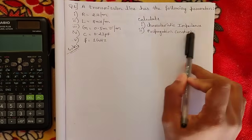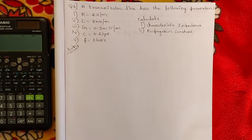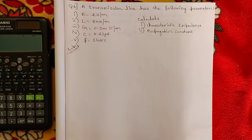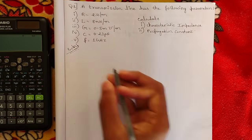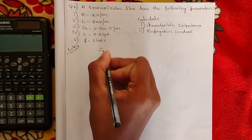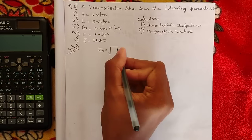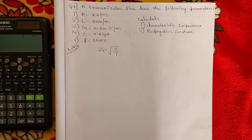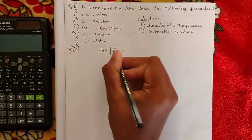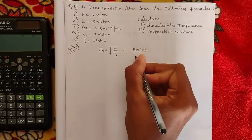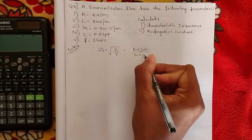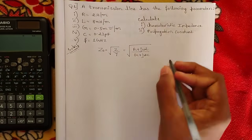Based on these parameters we need to calculate the characteristic impedance and the propagation constant. We have already derived the expression for these. The characteristic impedance Z0 equals the square root of Z divided by Y, where Z = R + jωL and Y = G + jωC.